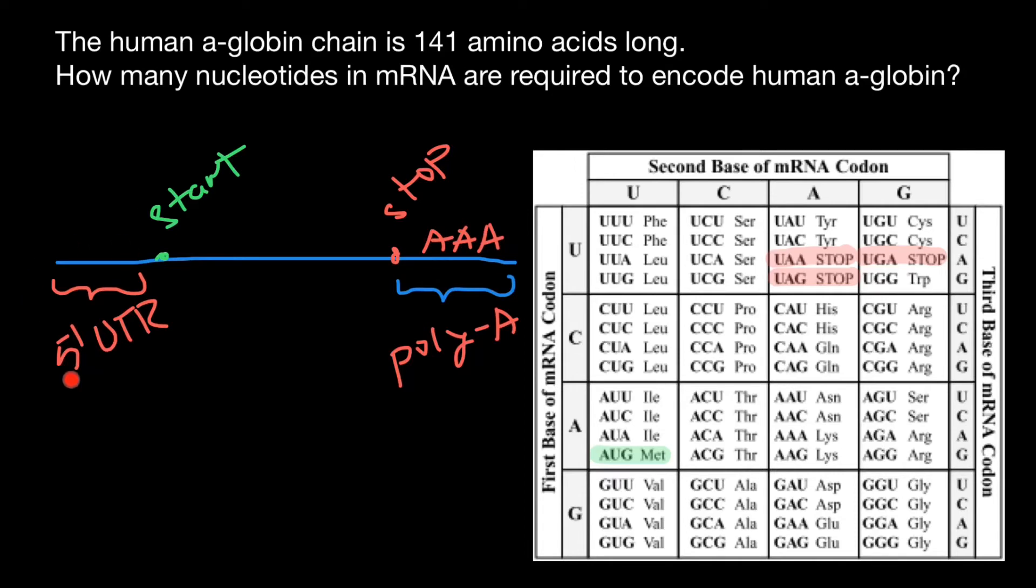So the 5' UTR and poly-A tail are not going to be part of this protein. We have to understand that the start codon specifies methionine, so this protein would have methionine. The stop codon is not going to be part of this amino acid chain, but we know it is essential and will be present here.